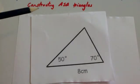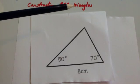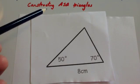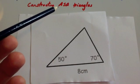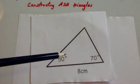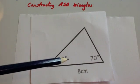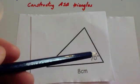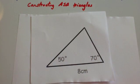In this video we're going to be constructing angle-side-angle triangles. We're drawing ASA triangles — an angle, the side in between the angles, and the angle. So an ASA triangle.